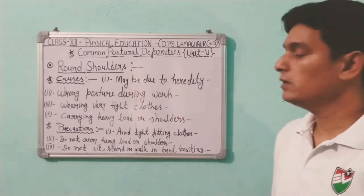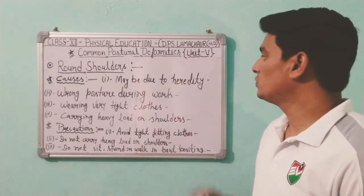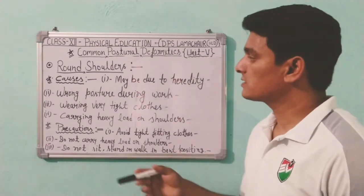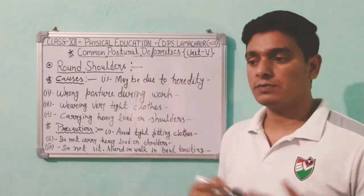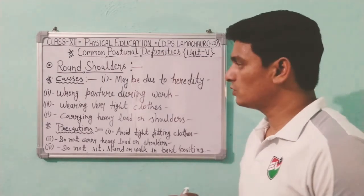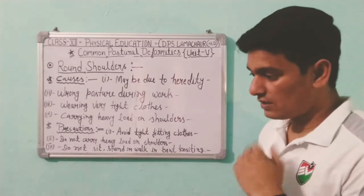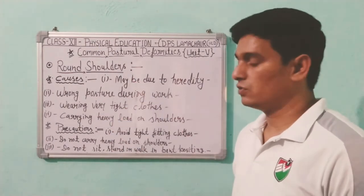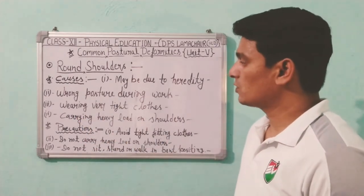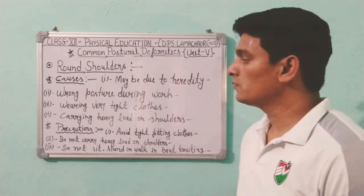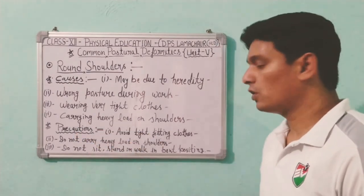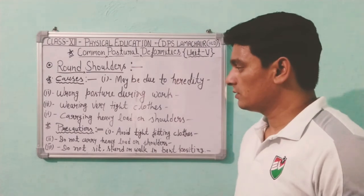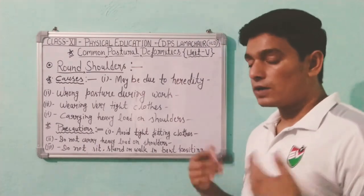The causes of round shoulder include: heredity — this deformity can be passed to the next generation. Wrong posture during work — having a habit of wrong posture is very harmful. Wearing very tight clothes is also a cause. Carrying heavy loads on the shoulders for a long time can also lead to this deformity.